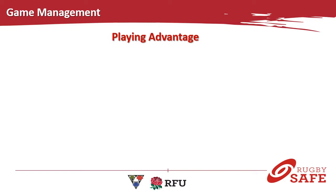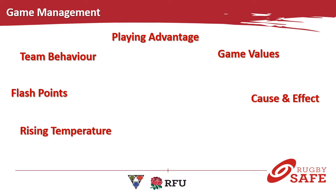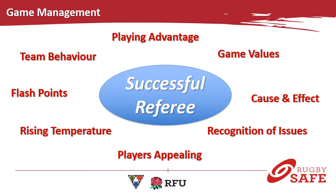We're going to look at how we play advantage and where we would do this, and we're going to talk about the different levels within the community game and league structures to make sure this is geared to your particular experience of rugby. We look at the behaviours of the teams, the values of the game, flashpoints that can occur, cause and effect, how to spot when the temperature of a game is rising, and also that wonderful one of players appealing. If we put all these together, we end up with a hopefully successful referee.